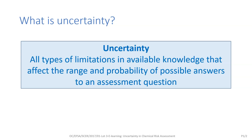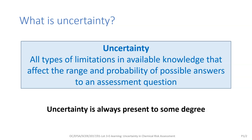What do we mean by uncertainty? In EFSA's guidance, uncertainty is used as a general term referring to all types of limitations in available knowledge that affect the range and probability of possible answers to an assessment question. This includes limitations in the relevance, reliability, and consistency of evidence used in the assessment, which might include data, statistical estimates, modelling, qualitative evidence, and expert judgment. These things are always uncertain to some degree, and they matter because they lead to uncertainty in the conclusion of the risk assessment.